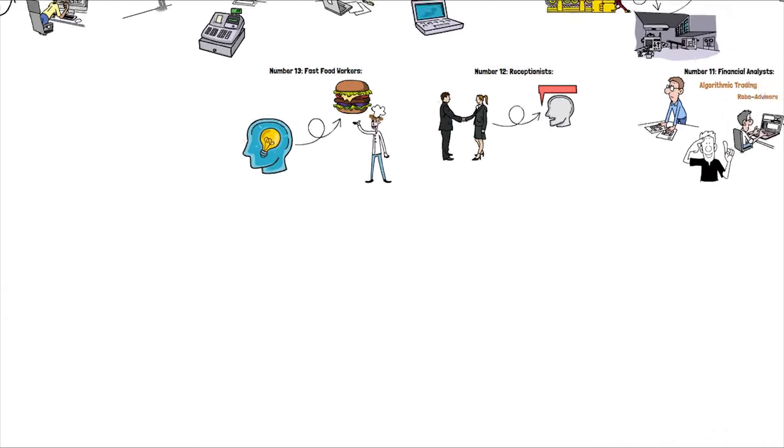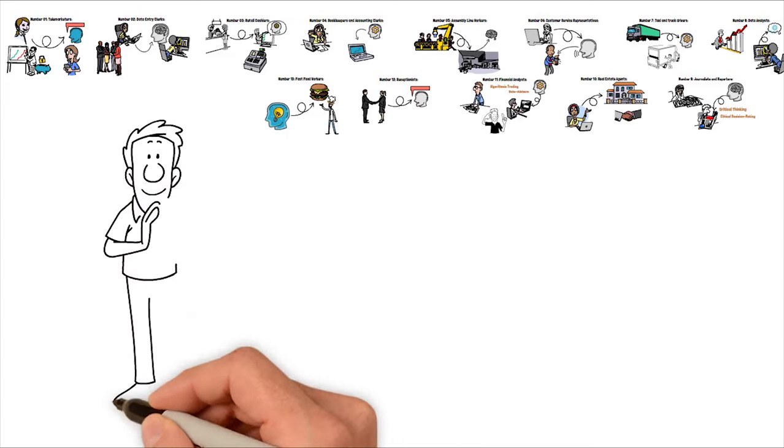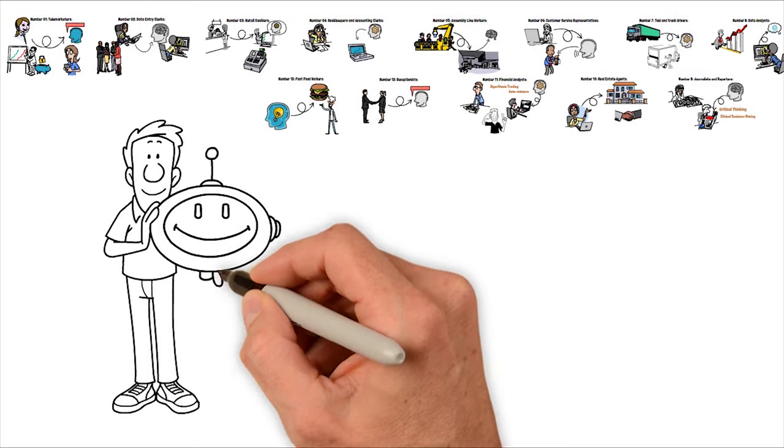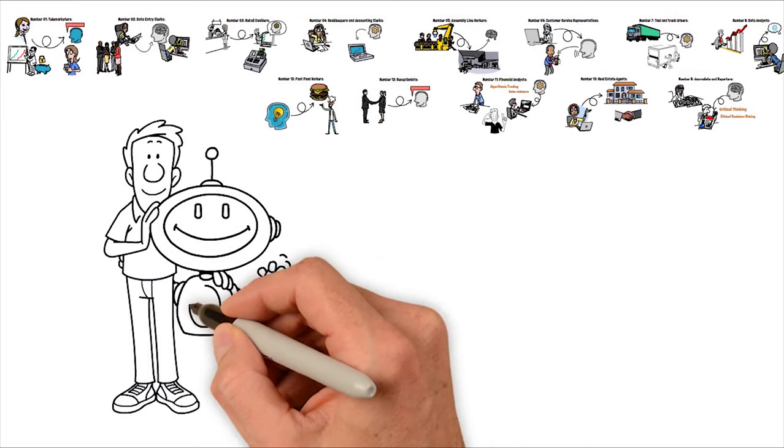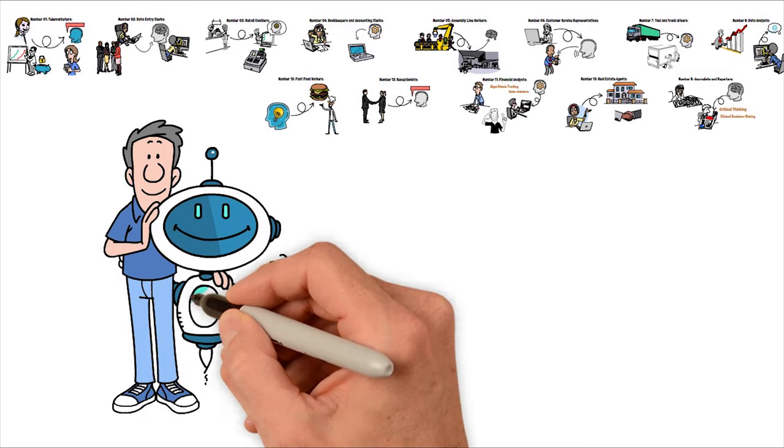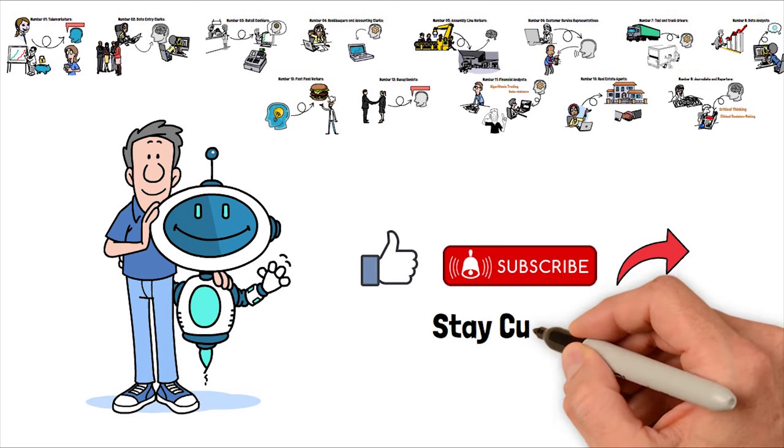And there you have it, folks, our countdown of 13 jobs that are at risk of disappearing in the future due to advances in artificial intelligence. While AI promises to bring many benefits to society, it's essential to consider the implications for the workforce and prepare for the inevitable changes ahead. Thanks for tuning in, and don't forget to like, share, and subscribe for more thought-provoking content on the intersection of technology and humanity. Until next time, stay curious.